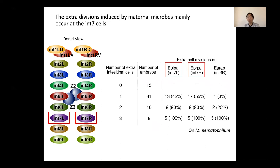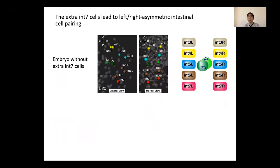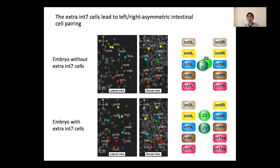In most embryos, one or both of the INT7 cells divide, increasing the number of intestinal cells to 21 or 22, and occasionally INT3R divides further. To explore the effects of extra intestinal cells, we traced the positions of all intestinal cells in embryos whose mothers had experienced harmful microbes. We found that in embryos that had undergone extra INT7 divisions, the right side of the cells in the mid-intestine moved anteriorly, resulting in a left-right asymmetric cell arrangement.